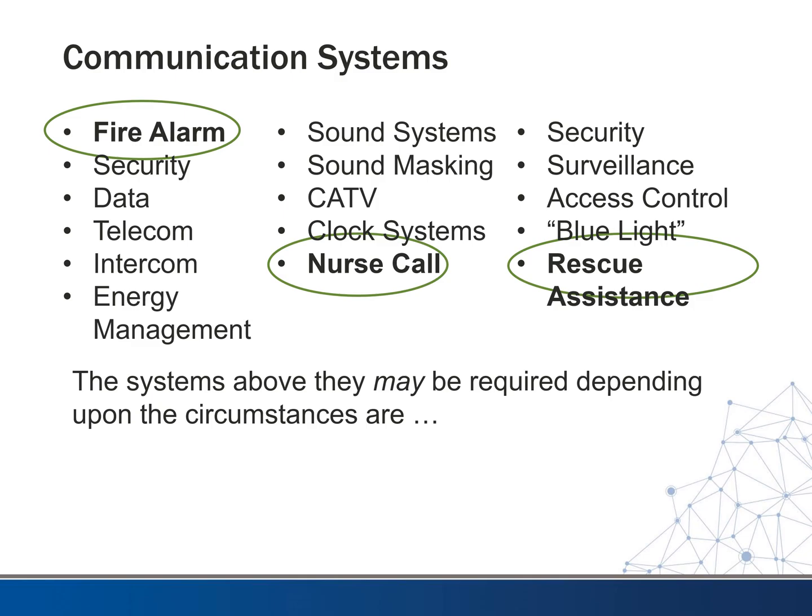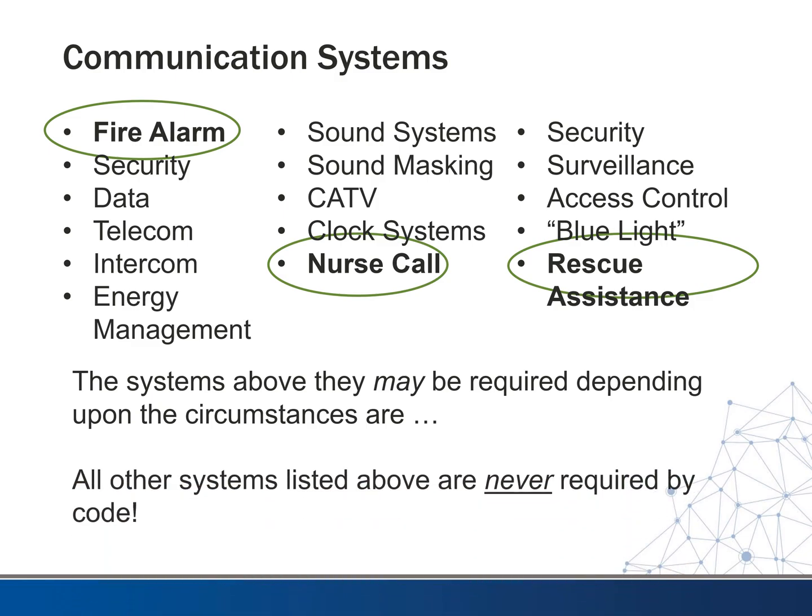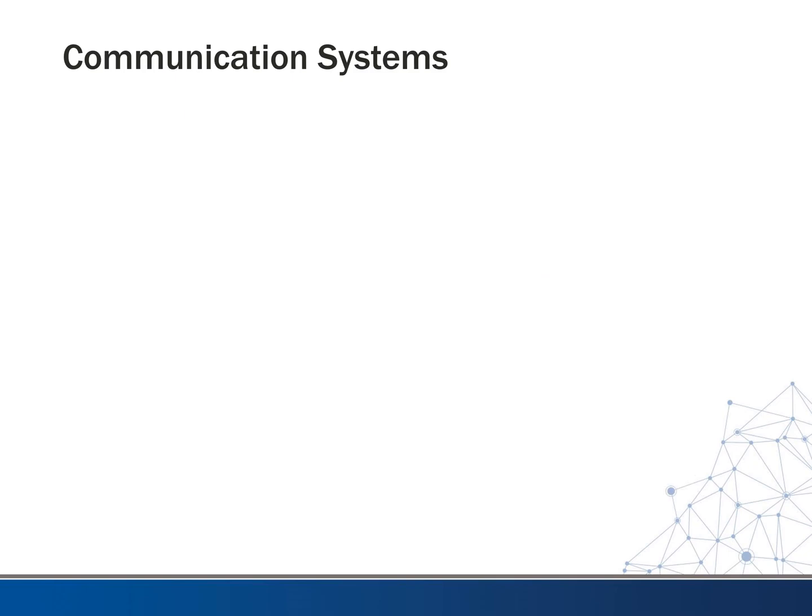The other required system is nurse call. Many states require this in healthcare facilities — if someone is in distress in their room, they can call a nurse. All these other systems should never be required by code. I can't think of an instance where a code official would say you have to have a sound system or an intercom system; these are all usually elective systems by the owner.